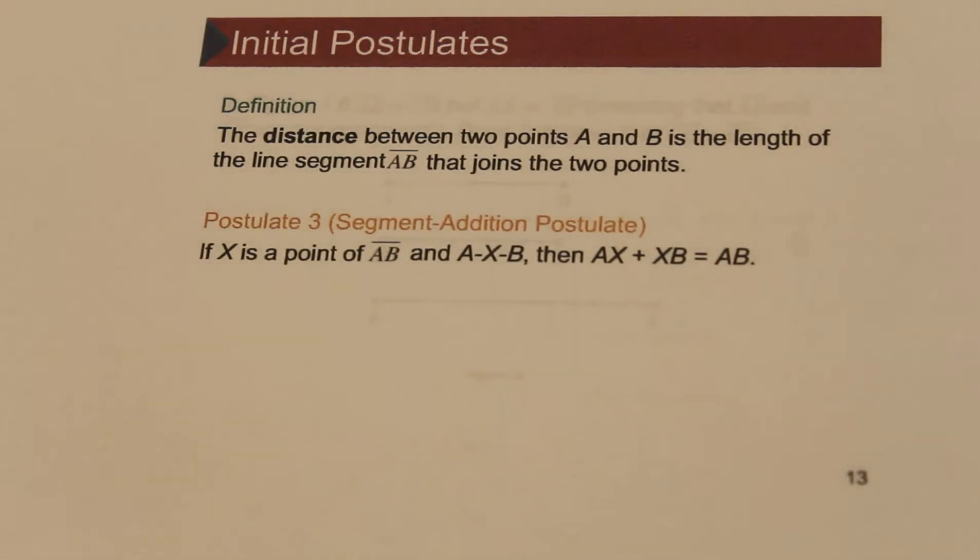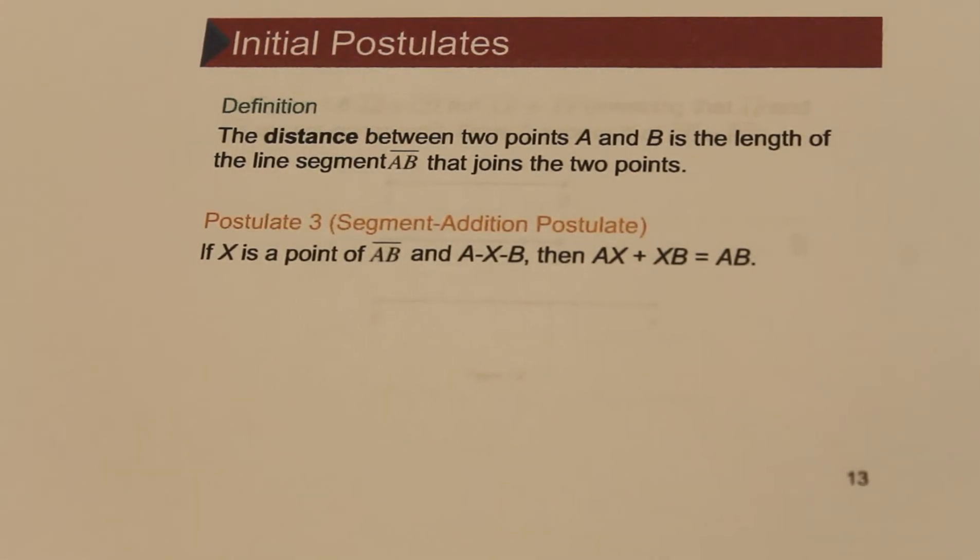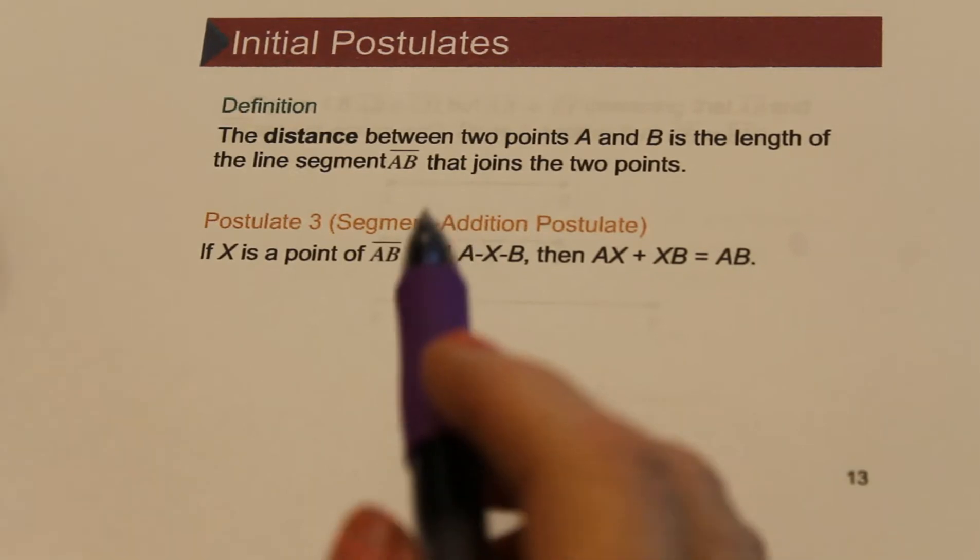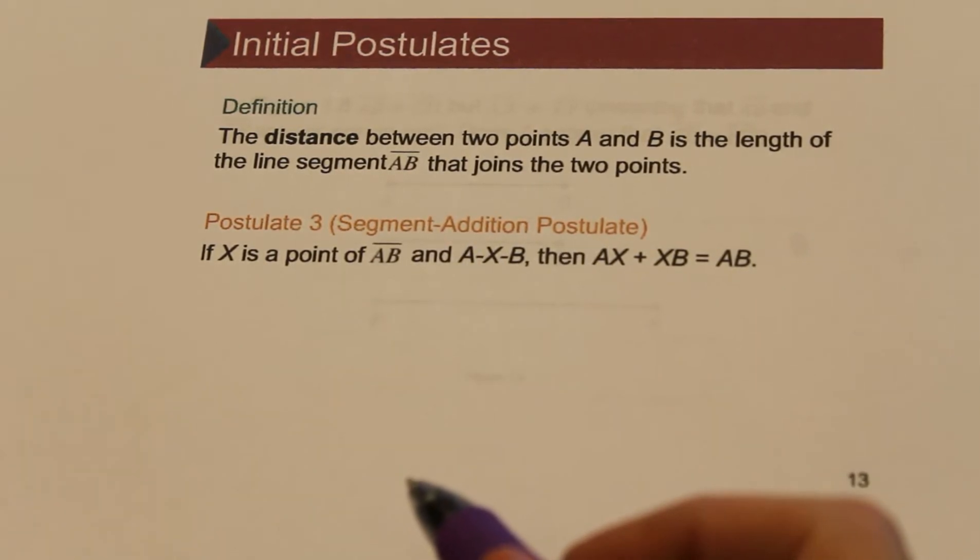So let's continue with our postulates. By definition, the distance between two points is the length of the line segment between the two points. And furthermore, here we have the segment addition postulate, which we're going to use quite a bit.